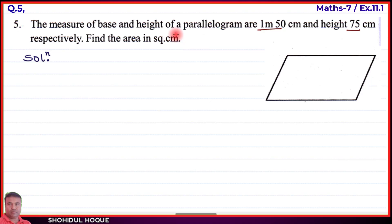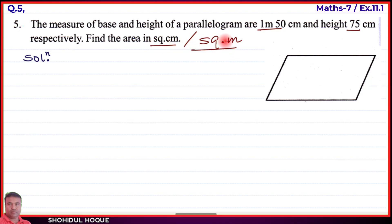Now, looking at this problem, we have the base and height given, and we need to find the area in square centimeter. The area formula for a parallelogram is base into height. We need to make sure we write the area in square centimeter, so let's first write down what is given.